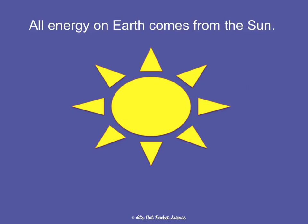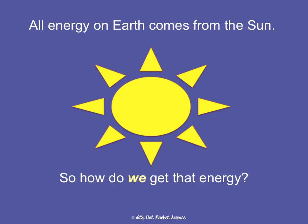All energy on Earth comes from the sun. If the sun isn't here, Earth will not be able to function. So how do we get that energy if it's in the sun? You can't just go outside and sunbathe and absorb energy and be fine. This concept is about how energy from the sun flows through different organisms in an ecosystem in order to get to you and other living things.